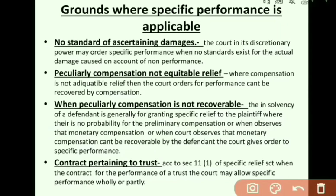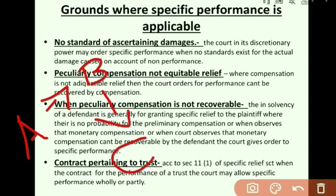No standard of ascertaining damages: the court in its discretionary power may order specific performance when no standard exists for actual damage cost on account of non-performance. For example, suppose A made a contract with B to pick up C from the airport, but B didn't perform as per the agreement, due to which A suffered a huge loss. A filed a case against B in court. The court cannot give a judgment to B to do specific performance because the specific picking up of C was only once. Instead, the court will give an order to compensate A's loss by giving him money.